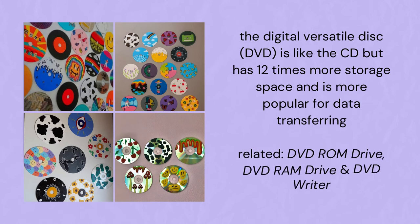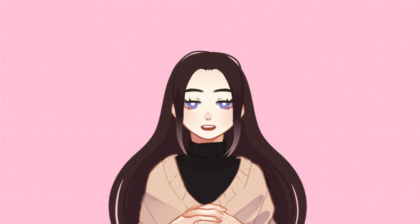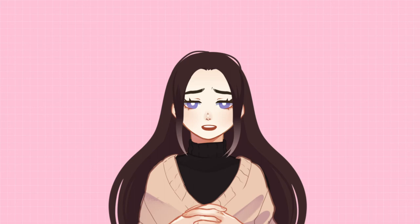Now we will go to the Digital Versatile Disk or DVD. It is like a CD, but it has 12 times more storage space and is actually more popular for data transferring. This is basically the upgraded version of a CD. Not only does it have a ROM drive and a writer, it also has a RAM drive. The difference between the ROM and the RAM drive is that the RAM drive is used for rapid writing and reading of data from a special type of DVD. The ROM drive and the DVD-Writer function nearly the same as the CD-Writer and ROM drive, but designed for digital versatile disks.